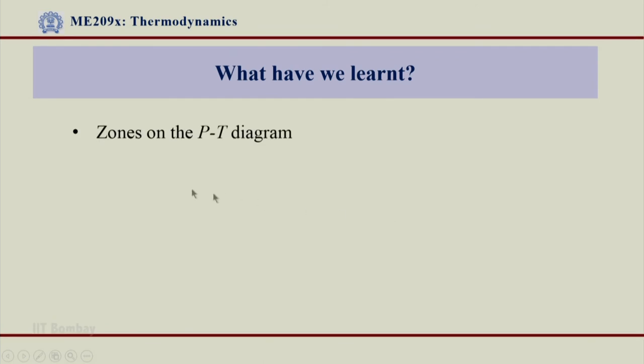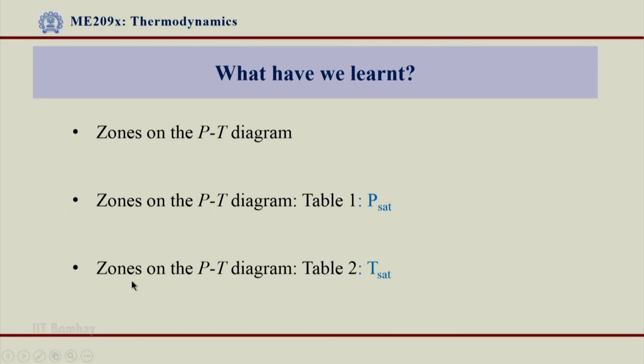What have we learnt? We have seen how to identify a given thermodynamic state in which zone it belongs to on a P-T diagram. We have seen that zones on P-T diagram by referring to table 1, we compare the value of pressure with P_sat and in table 2, we compare the value of T with T_sat. Thank you very much.